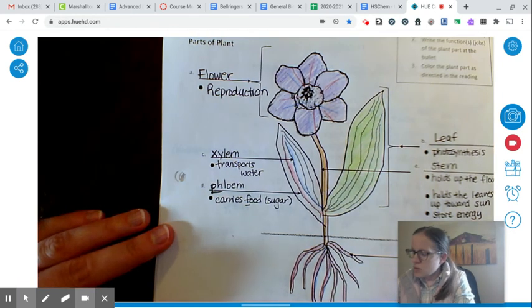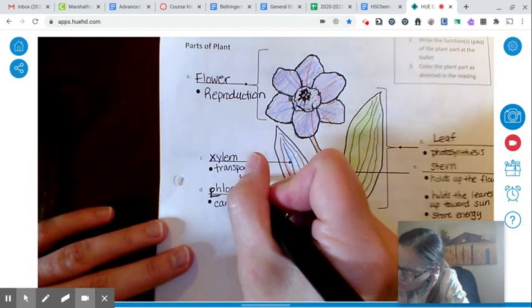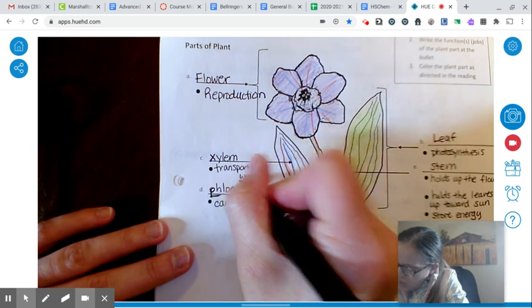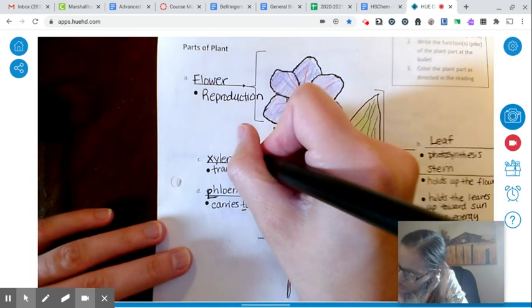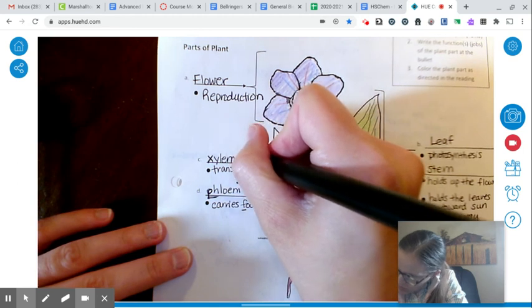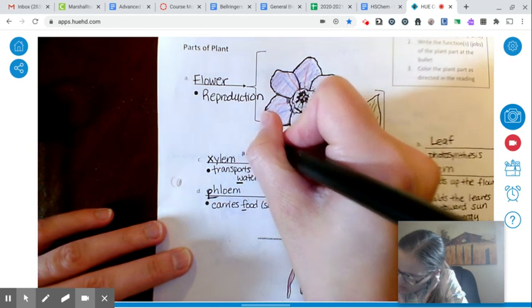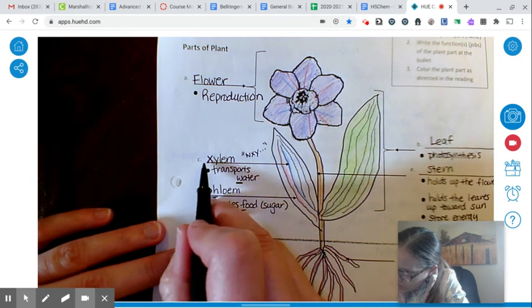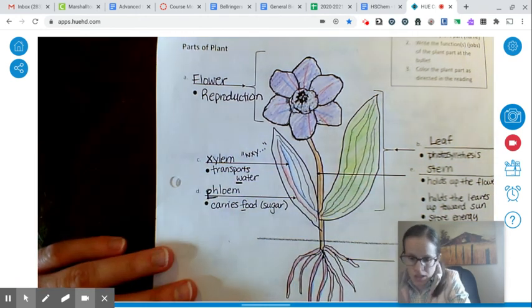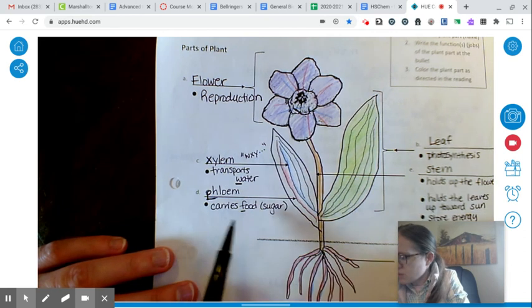It might help you to remember this one by remembering water starts with a W. So you could think W, X, Y, right? There's X, Y here. So W, X, Y, water, xylem. That might help you. And then phloem and food.